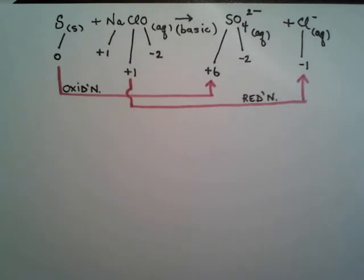The first step is to assign oxidation numbers to all your species, reagents, and products. That's done, and having done that, we can see that oxidation is happening in the sulfur, and the chlorine's going from plus one to minus one, or else being reduced.